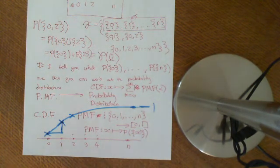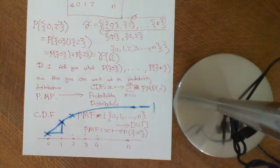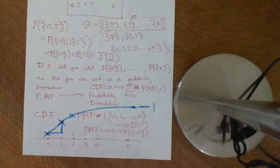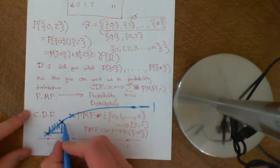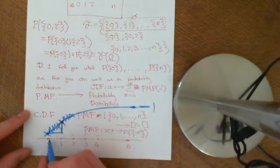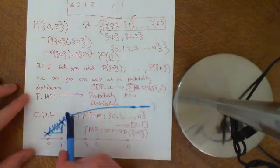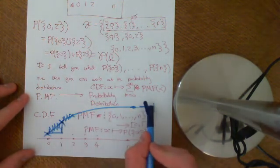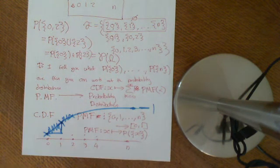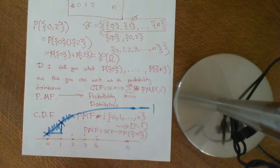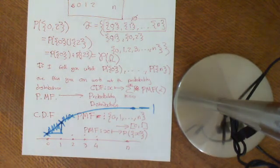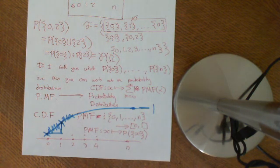The CDF turns out to be a more powerful way of encoding the probability distribution. Note that the function isn't defined between the integer points — this is a discrete probability space, so it should just be a series of points going up to 1 at n. The key point is that the CDF is a valid way of representing all the information in a continuous probability space — i.e., where the set of outcomes is uncountable — whereas the PMF breaks down. So that's the main takeaway from this video.